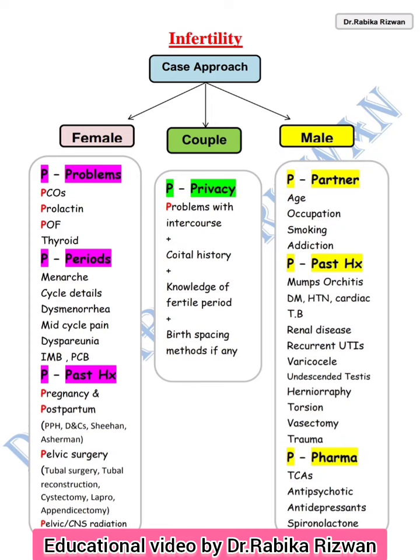Now coming to P for past history — سب سے پہلے pregnancy and postpartum. Of course, if it is primary subfertility, then there is no pregnancy. After that, P for pelvic surgeries — بھی بڑی important ہے. Pelvic surgeries include tubal surgeries, ectopic pregnancy repair, ovarian cystectomy, laparoscopic myomectomy, dermoid cyst removal. Any kind of pelvic surgery causes adhesions, disturbs tubal anatomy, and can affect ovarian morphology.